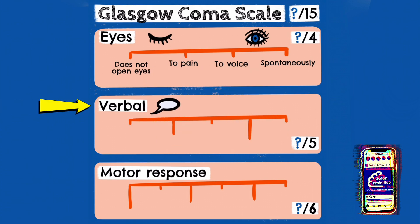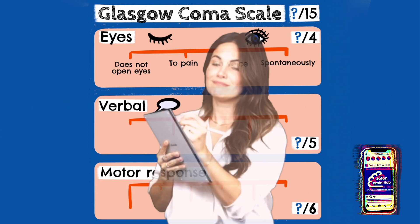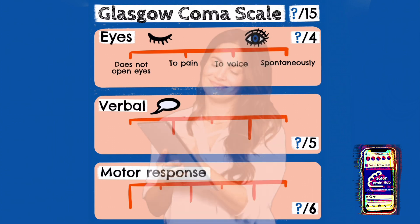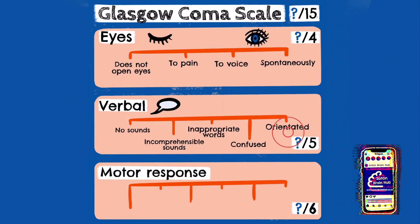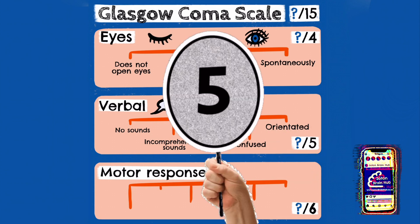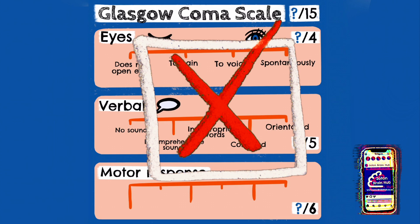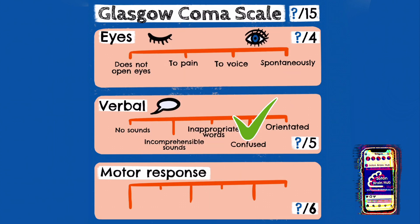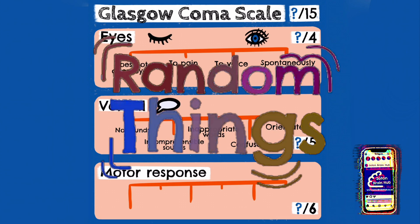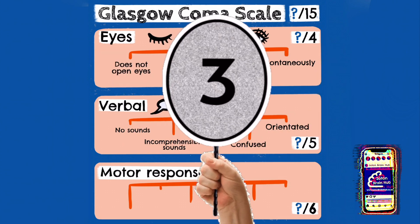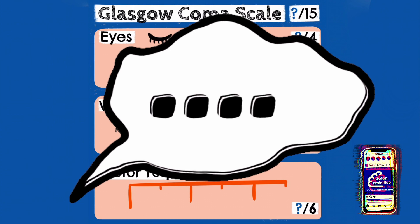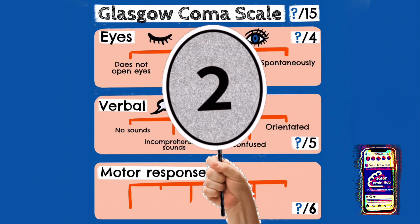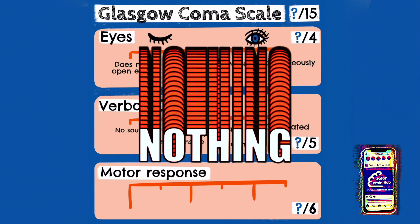You would then move on to a verbal response, which is scored out of 5. You would ask a couple of orientation questions, such as name and date of birth. If they answer these questions correctly, that is orientated, scoring a 5. If they're answering the questions wrong, you would give them a score of 4, as confused. If they are answering with inappropriate words — a completely different topic to the question asked — that would be a score of 3. If they are using incomprehensible sounds such as grunts or moans, you would give them a score of 2. If there's no response, that is a score of 1.